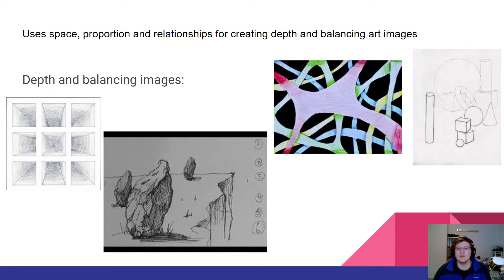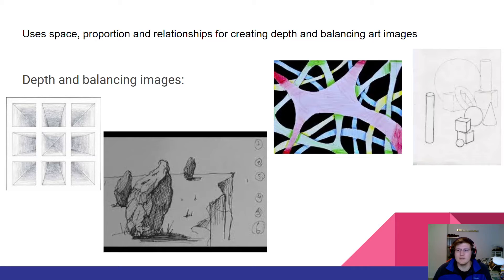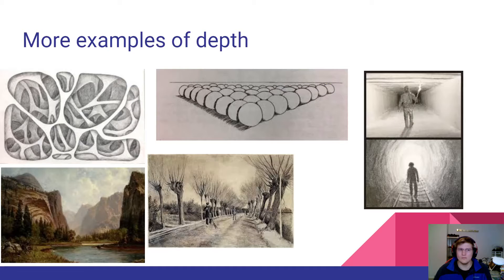We're creating depth in a two-dimensional space. Same with our squiggly lines on the right — those colorful lines have some areas darkened in and layered underneath, creating an illusion of depth. Over on the right, that image looks at balancing an image while also still creating depth, so that one shows a bit of both.